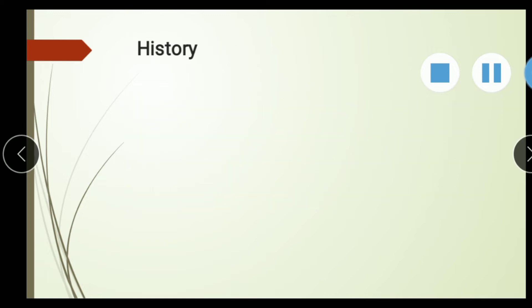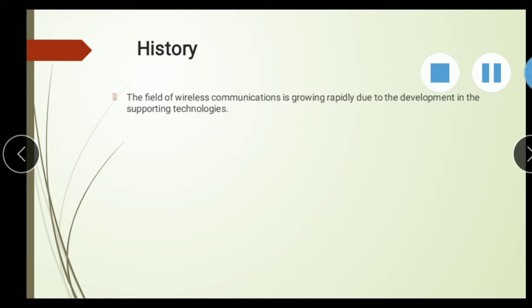The history of mobile phones — first generation, second generation, third generation, fourth generation — and how they were developed. The field of wireless communication is growing rapidly due to development in supporting technology, and as new technology emerges, its speed increases.